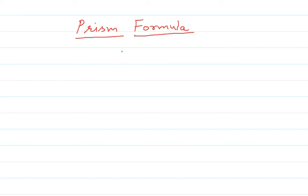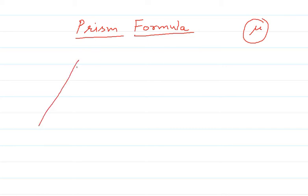Hello friends, good evening to all of you. I am going to derive an expression known as the prism formula. When we derive the prism formula, we use the condition of minimum deviation and ultimately get an expression for mu — the refractive index of the prism. Let's suppose we have a prism, and A is the angle of prism.